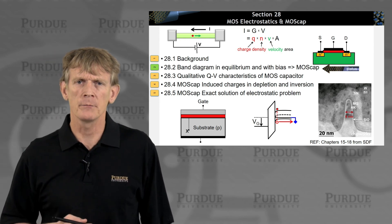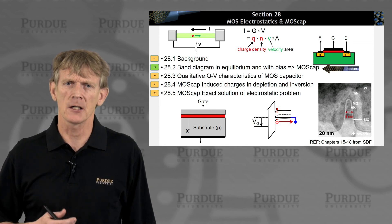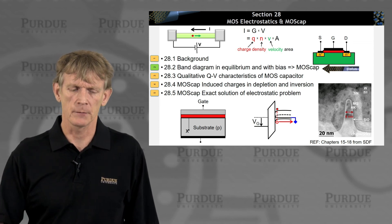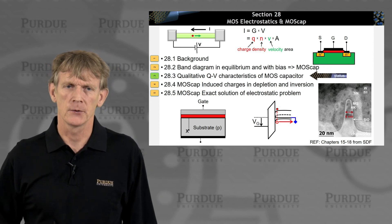All right, so we've drawn band diagrams, now we're going to look at some charge characteristics in this MOS capacitor. All right, that's the next section. I'll see you there.